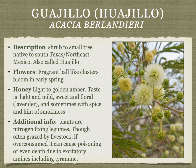Hoaio is a nitrogen-fixing plant in the legume family, and like other legumes, bees like to work its flowers. The honey is light to golden amber — light and mild, sweet floral, sometimes lavender-like, sometimes with a hint of spice or smokiness. The plant is often grazed by livestock, but if over-consumed it can cause poisoning due to excitatory neuroactive amines including tyramine.